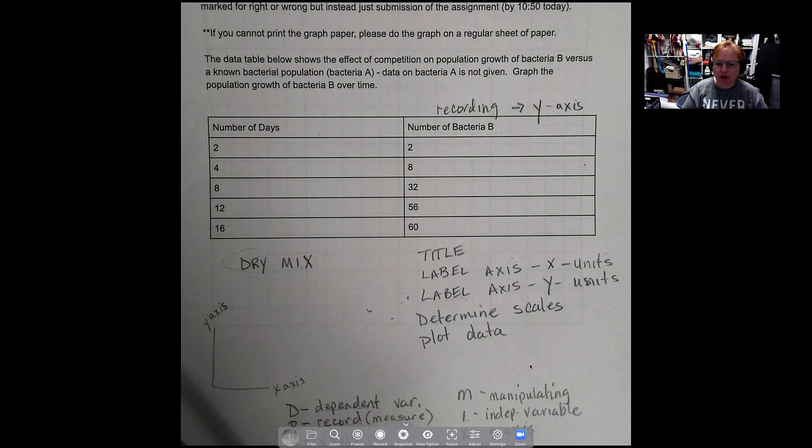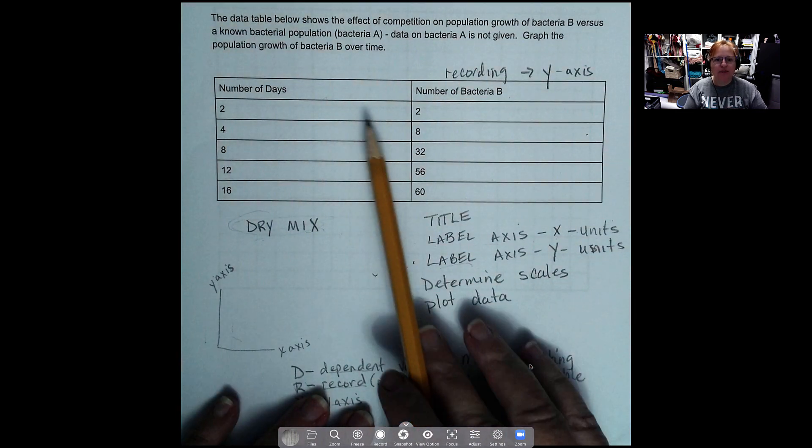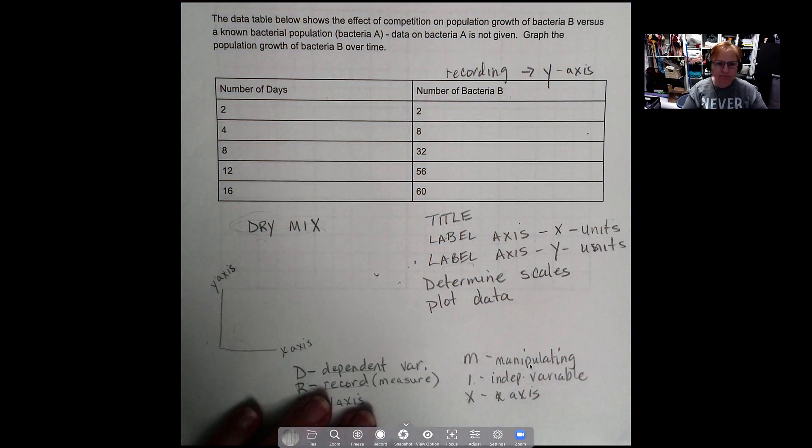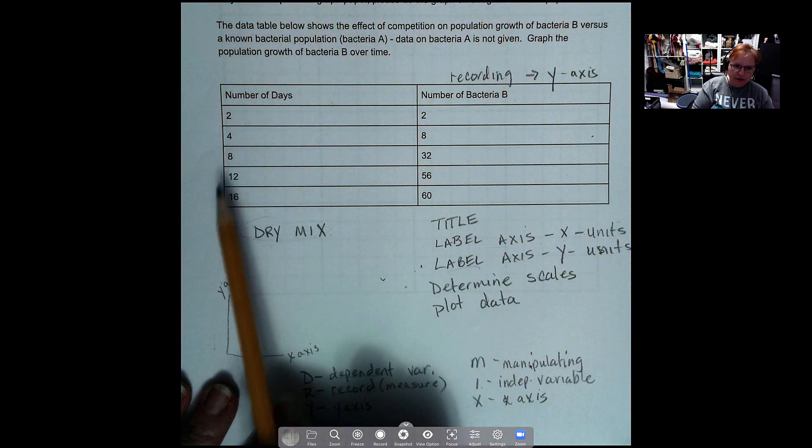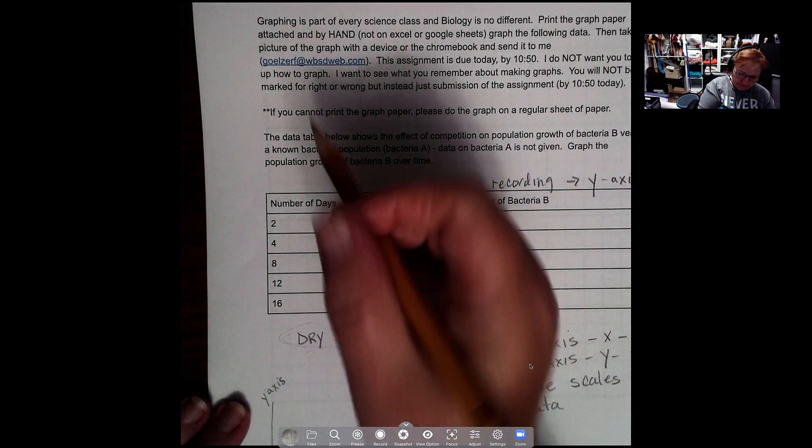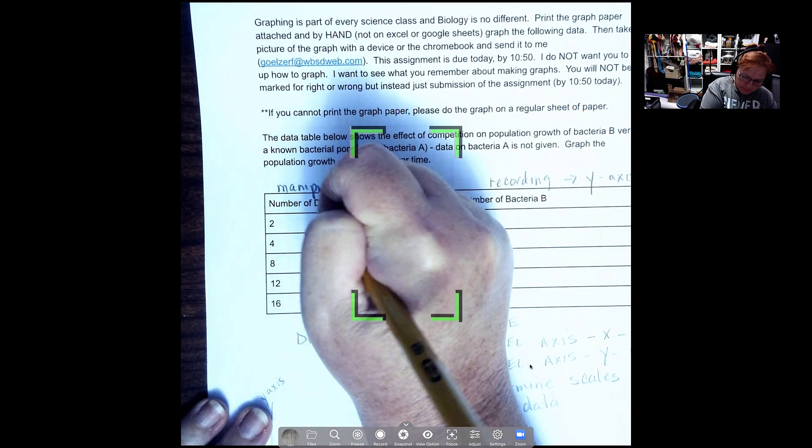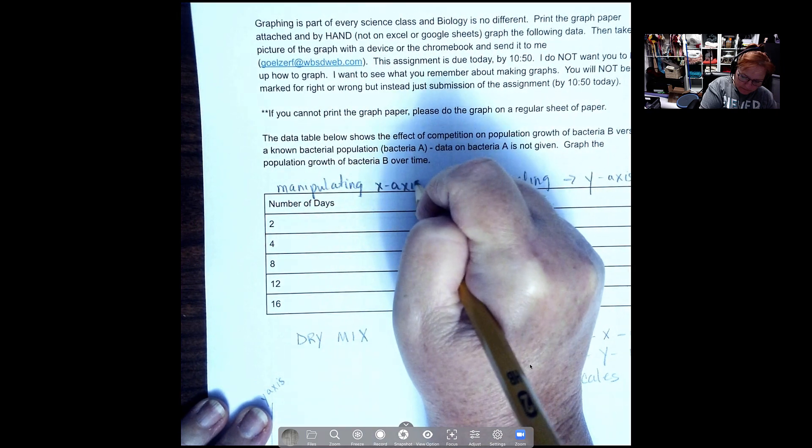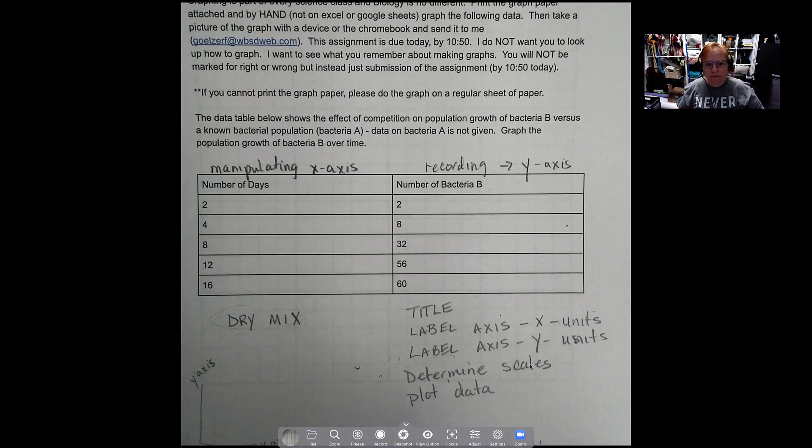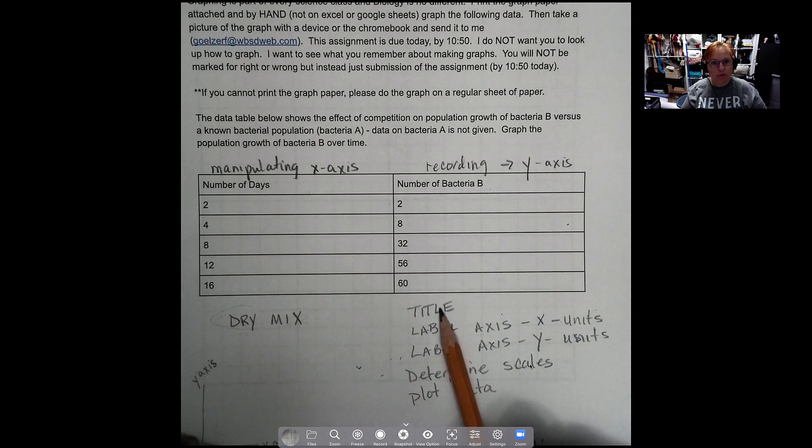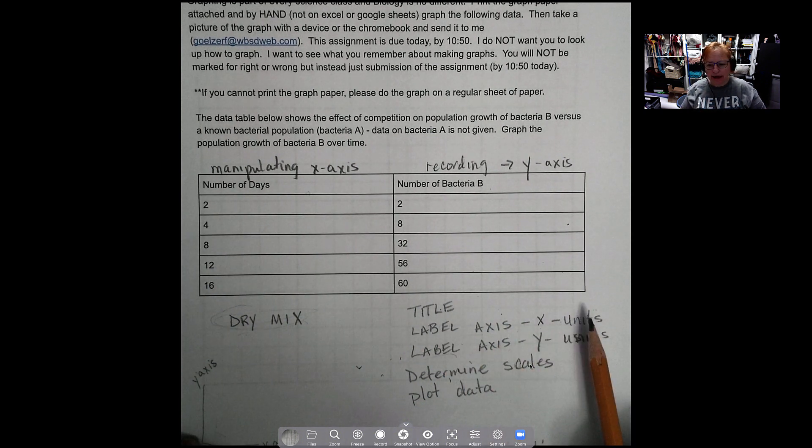So in that sense, this is the data, or I'm sorry, this is the variable that you are manipulating. So this is our independent variable, which goes on the x-axis. All right, so we're going to need a title, we're actually going to come back to that. We're going to label and add our units, we're going to determine our scale, and we're going to plot our data.